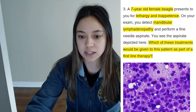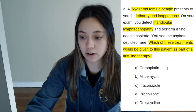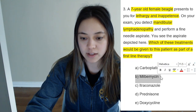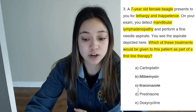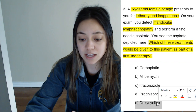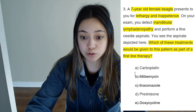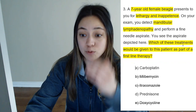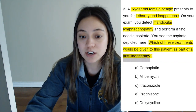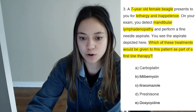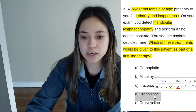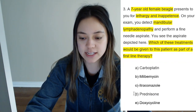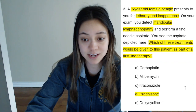Carboplatin — a chemotherapeutic drug, that's fair. Milbemycin — no, that's an antiparasitic. Itraconazole — no, that's an antifungal. Prednisone — an immunosuppressive drug, that's good. Doxycycline — that's an antibiotic. So we've narrowed it down to two. Let's re-read the question: which of these treatments would be given as part of first-line therapy? Carboplatin may be a chemotherapeutic drug, but it is not first-line. Prednisone is a first-line therapy. So because the question asked for first-line therapy, prednisone is the best answer here, and that is the correct answer. Spocked.